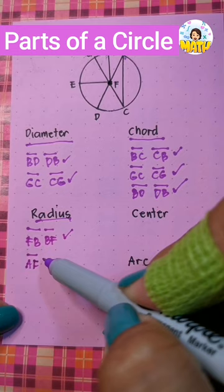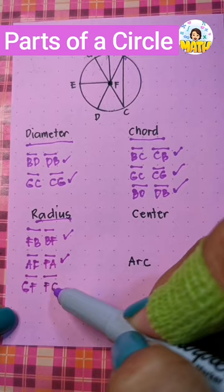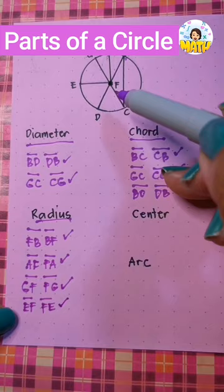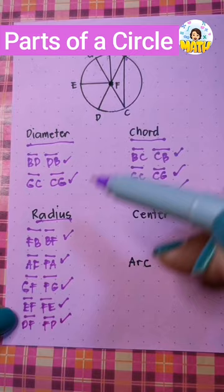They can be interchanged. We can have line segment GF or FG, EF or FE, FD and DF, and also FC and CF. Those are all the radii.